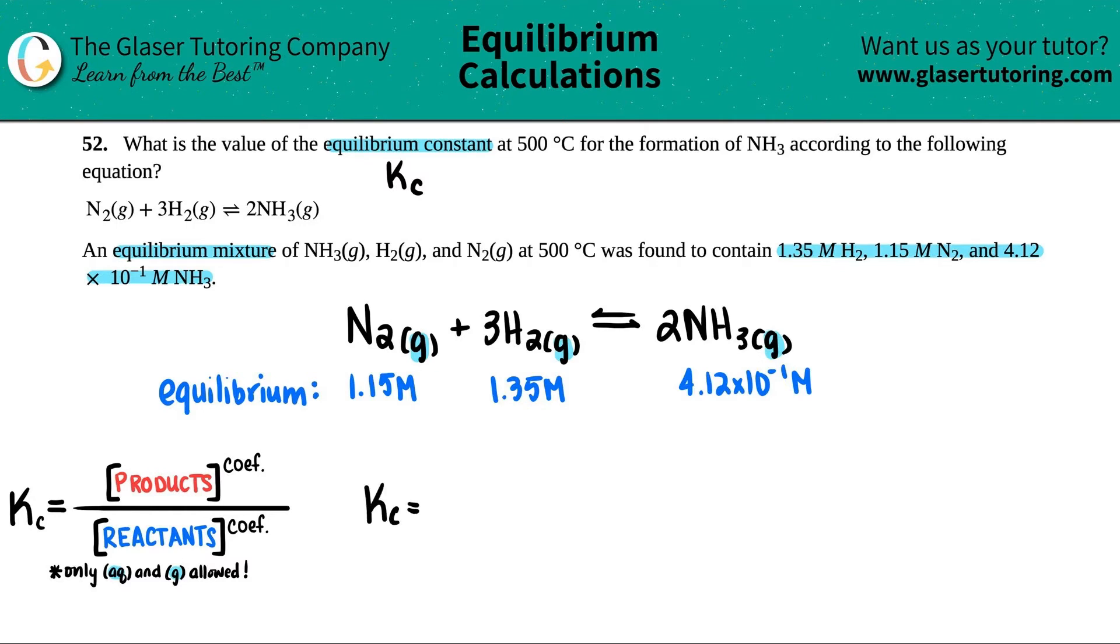KC equals something divided by something else, products. Looks like I have the NH3. Close that bracket. And now raise to the coefficients, right? COEF is just short for coefficients. There was a 2 in front of here, so I'm just going to square this. And then we got, let's see, our N2. Close up that bracket. That's raised to the 1st. There was nothing in front of here, so I could just keep moving on. These are multiplied by each other in the KC formula. So I have H2. Close that up. This is raised to the 3rd, so I'm just going to put a 3 here. The coefficient was a 3, so I'm going to raise it to the 3rd.